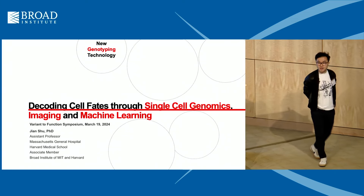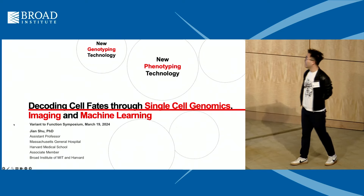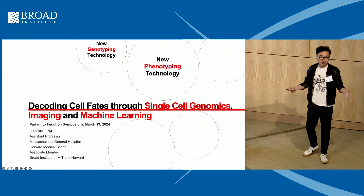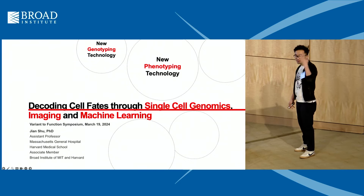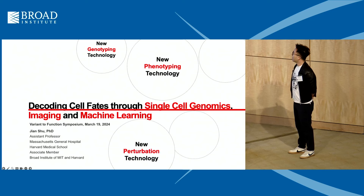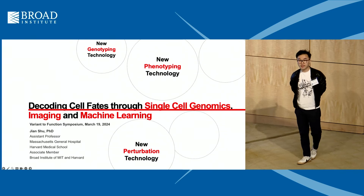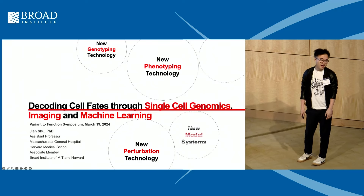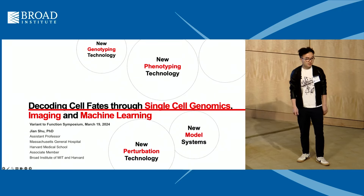In order to do this, we need new genotyping methods. We also need new phenotyping technologies that are scalable and cheaper, and that you can do at the organoid scale and in deep tissues. We also need new combinatorial perturbation technologies that can bring the genotype and phenotype together, and of course more complex and disease-relevant model systems.